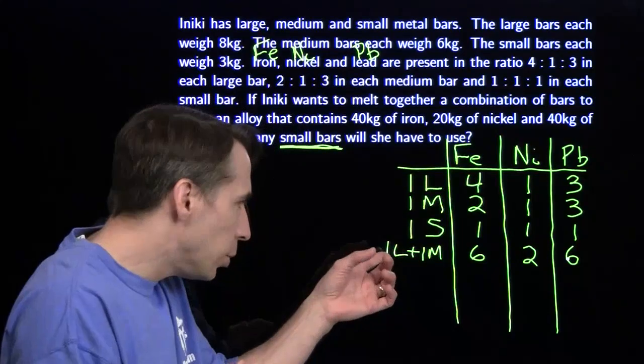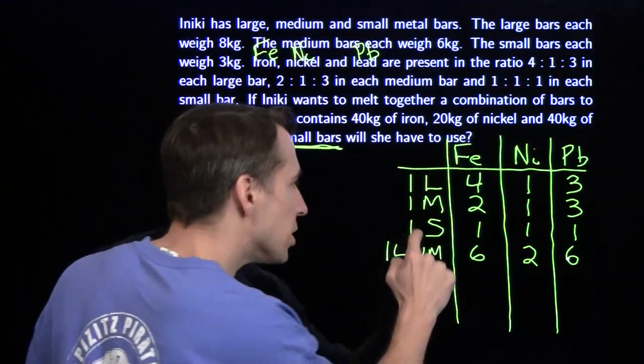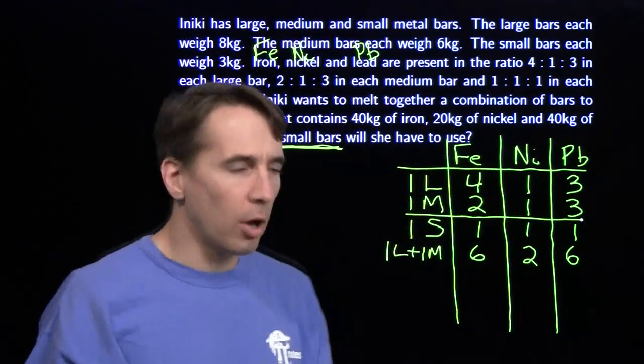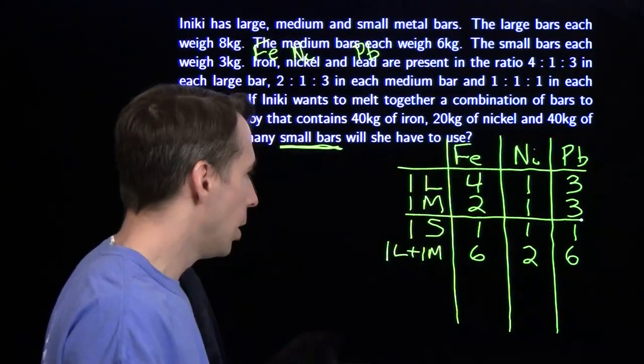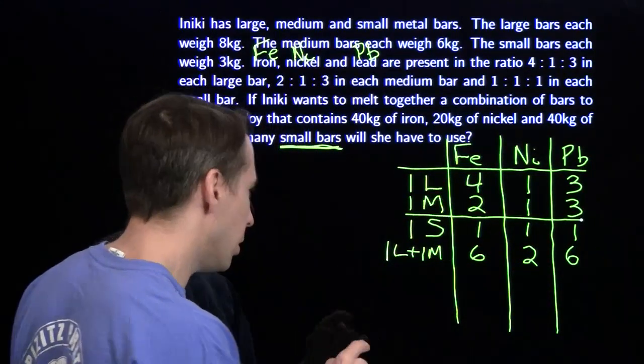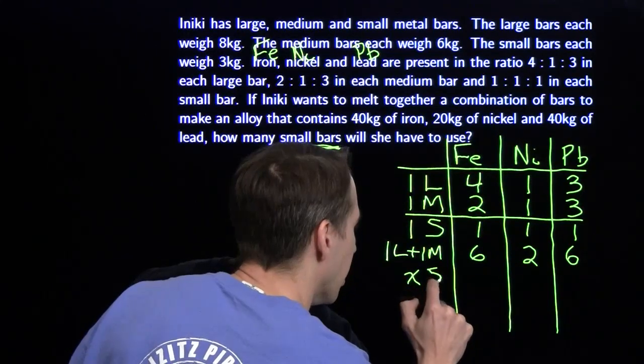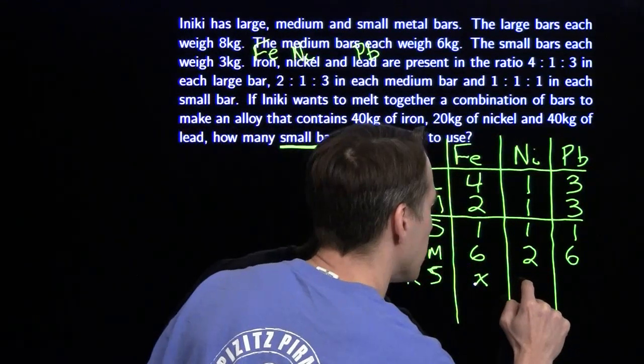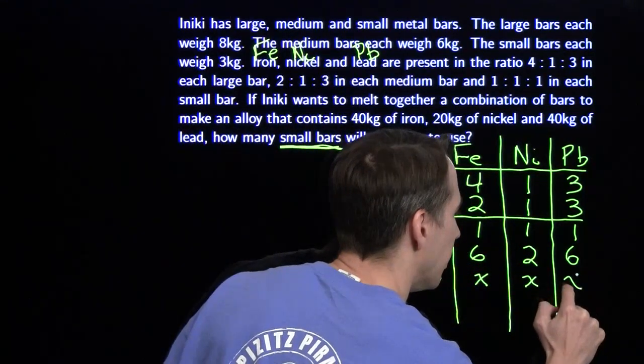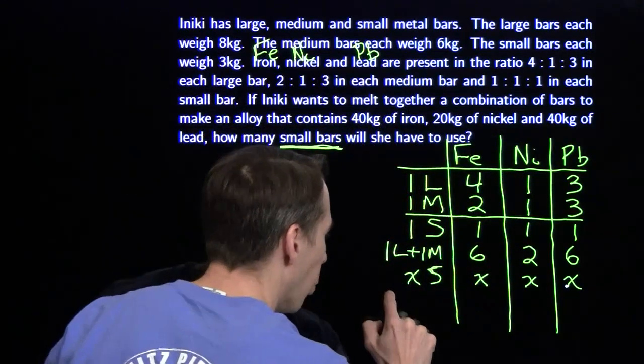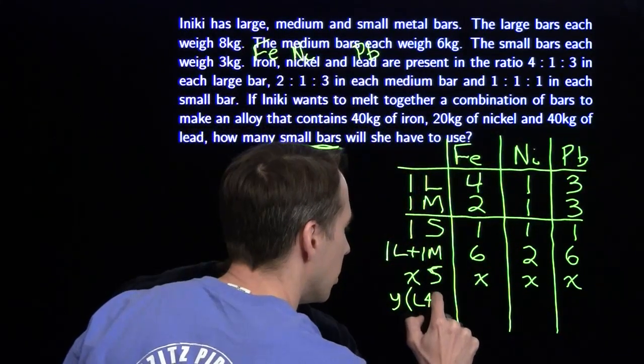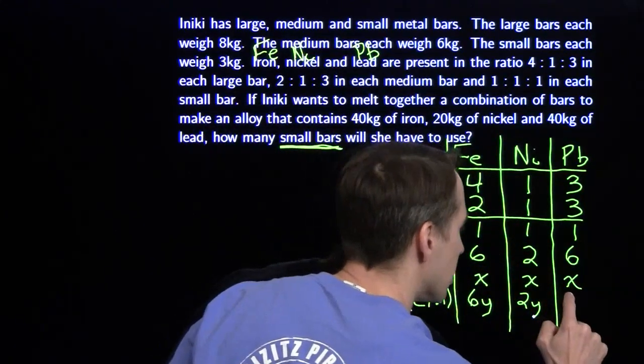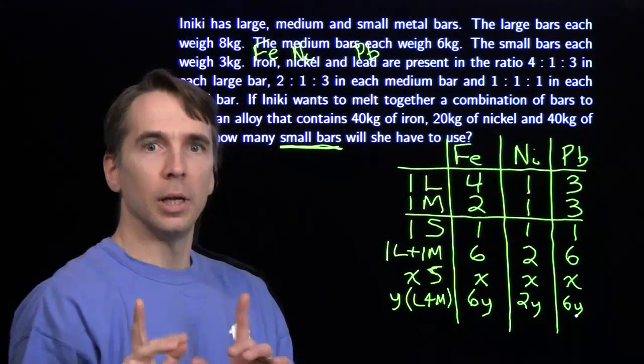Every time we throw in a large, we have to throw in a medium. Now we just have to focus on combining some number of smalls with some number of large and medium combos. I'm going to assign variables. There are x small bars, so that gives me x kilograms of iron, x kilograms of nickel, x kilograms of lead. I'm going to put in y of these combo bars, giving me 6y iron, 2y nickel, and 6y lead. Now I can write equations.